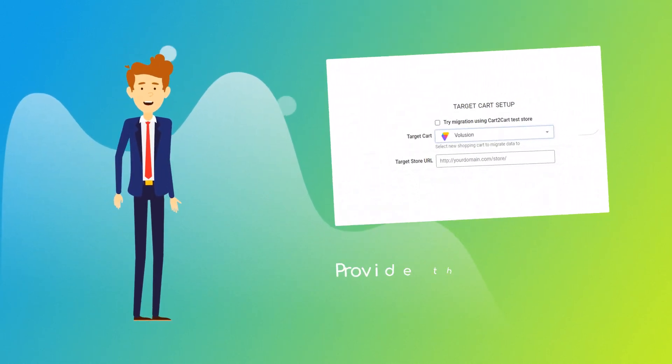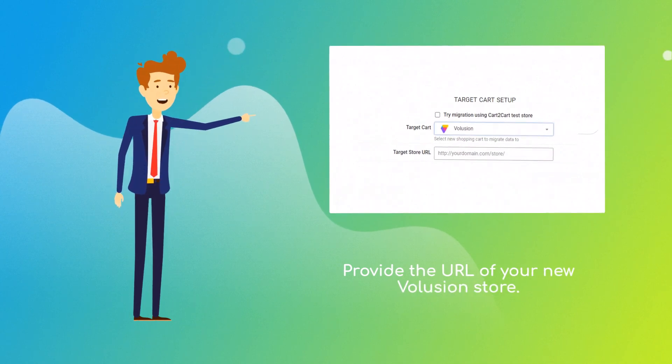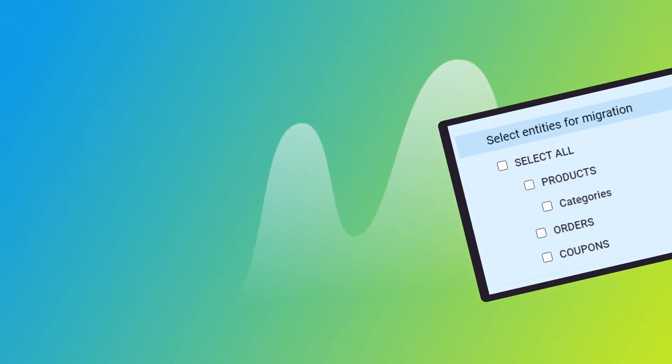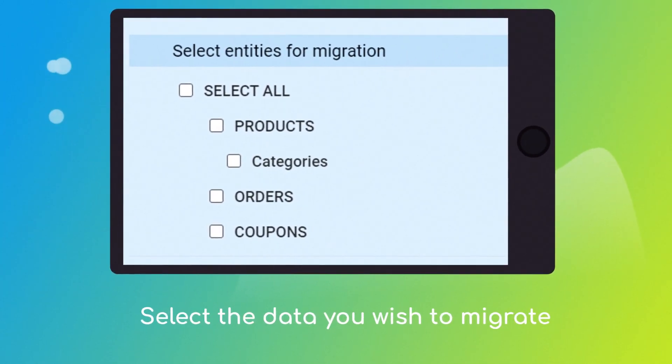Next, provide the URL of your new Volusion store. Once done, click the Choose Entities button to select the data types you'd like to migrate to Volusion.